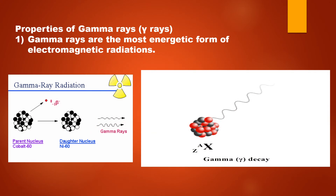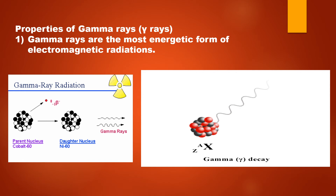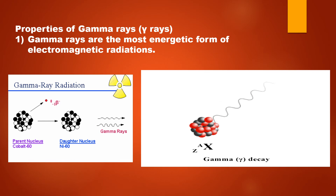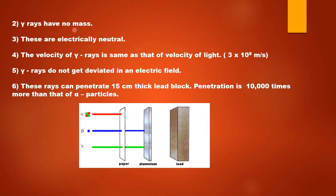Let us see the properties of gamma rays or gamma radiations. Sometimes the nucleus remains in a very excited state, so in order to attain a low energy state which is much more stable, the nucleus emits gamma rays. Gamma rays are radiations and not particles like alpha and beta particles. Gamma rays are the most energetic form of electromagnetic radiations. Gamma rays have no mass and are electrically neutral radiations. The velocity of gamma rays is the same as the velocity of light — 3 × 10⁸ meters per second. Gamma rays do not get deflected in an electric field.